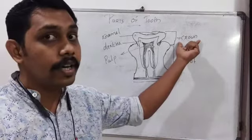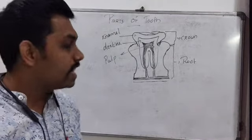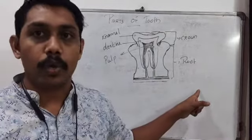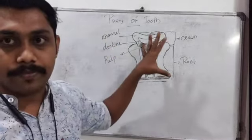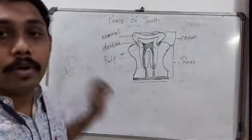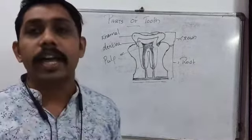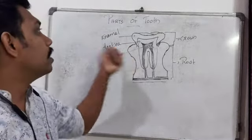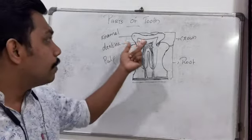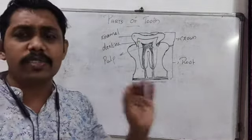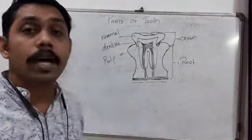The visible part is called crown, and the part of the tooth inside the gums is called root. The next part is dentine, which is below the enamel. And the last inner part is pulp, which is found below the dentine. Pulp is very soft and also has blood vessels.